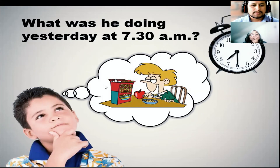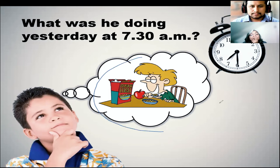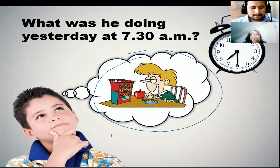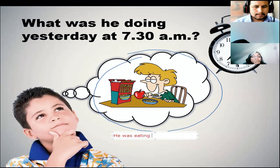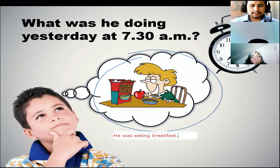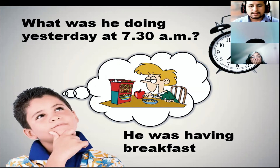Let's help Pablito. What was he doing yesterday at half past 7 a.m.? According to the picture, this is Shaggy. What was Shaggy doing yesterday at half past 7 a.m.? Student: He was eating breakfast. The teacher corrects: you must say 'breakfast' with correct pronunciation. The answer is: he was having breakfast.